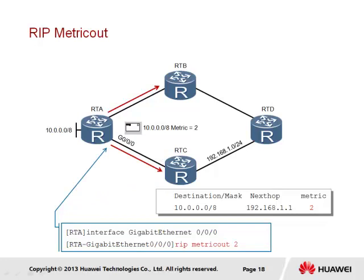As an alternative, it is also possible for the metric to be manipulated based on the outbound interface of the message. At the point of transmission via the Gigabit Ethernet 0/0/0 interface on RTA, the message is incremented based on the value specified in the Metric Out command, which in this case is 2. One point to be clear on is that the metric is incremented at the point of transmission, and so the metric specified in the Metric Out command represents the incremented metric value. This means that once the metric is received on the Gigabit Ethernet 0/0/0 interface of RTC, the metric will already carry a value of 2.